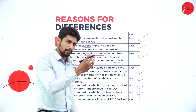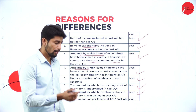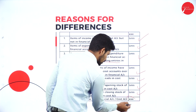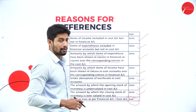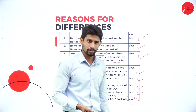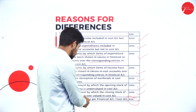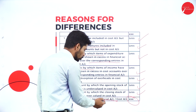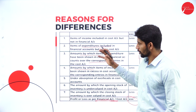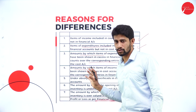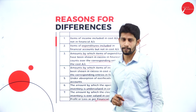So a few items are supposed to be added and a few items are supposed to be deducted from the costing profit. The final balance will be called as profit or loss as per the financial account. Here we have taken the costing profit as the base, so whatever profit or loss you get will be according to the financial account.